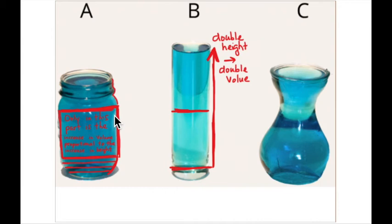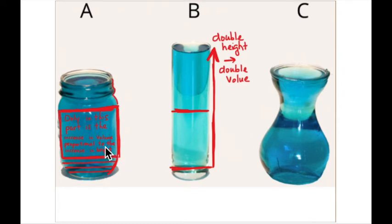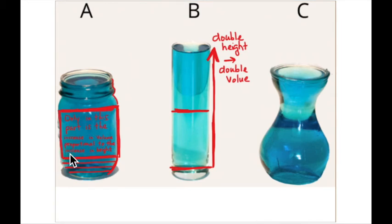For container A, proportionality only holds within this small middle section, where it doesn't curve in or out. Only in this section does the volume change proportionally to the height. That's the only place where the height of the liquid gives you an idea of what the volume is.